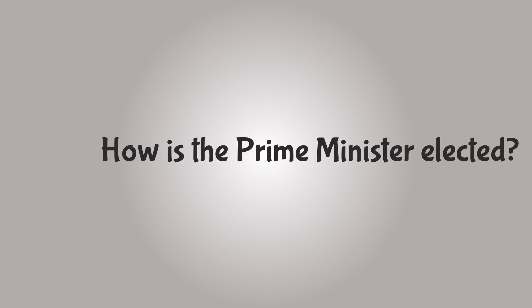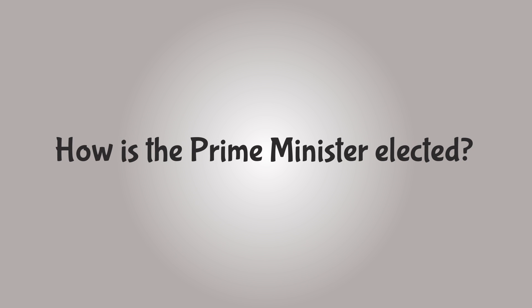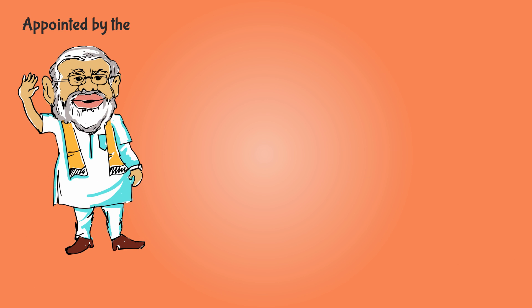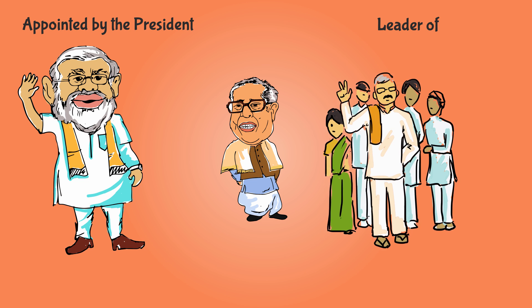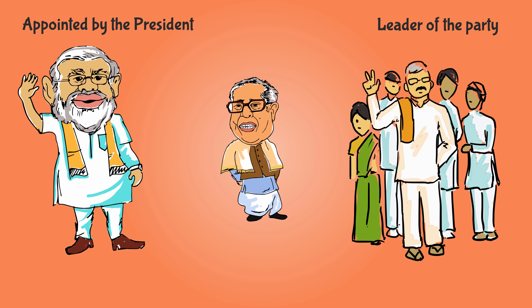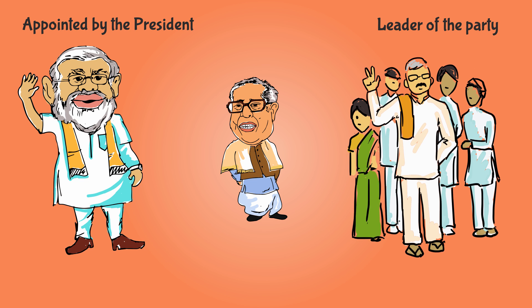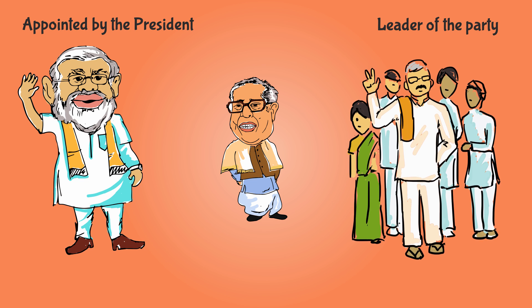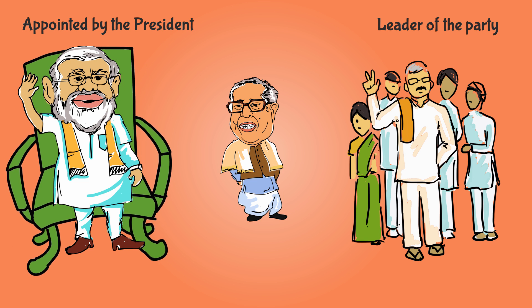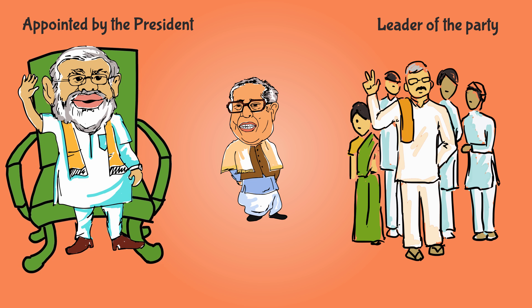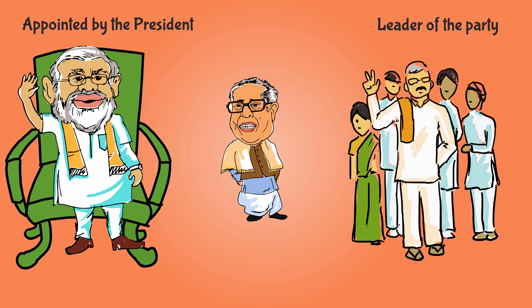So how is the Prime Minister elected? The Prime Minister is appointed by the President. The President appoints the leader of the party who proves a majority after the general election of Lok Sabha. The Prime Minister can remain in his position as long as he remains the leader of the majority party.